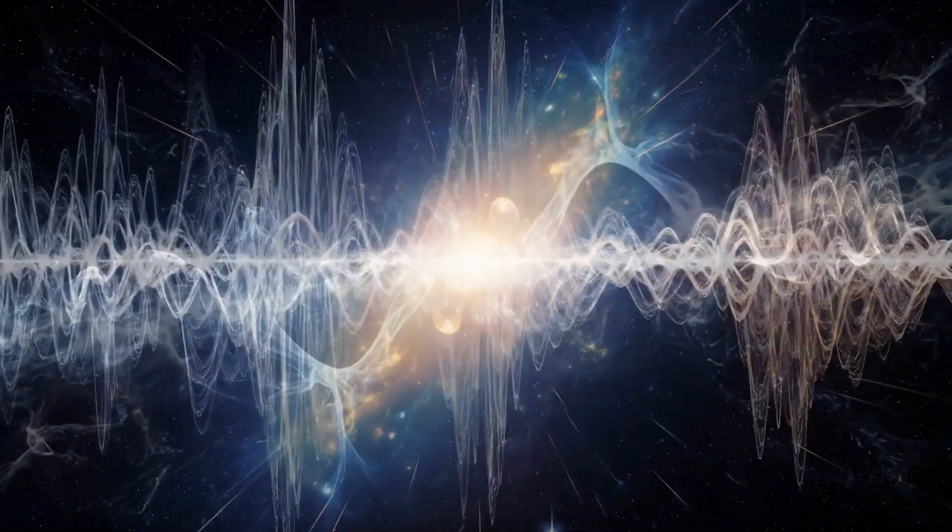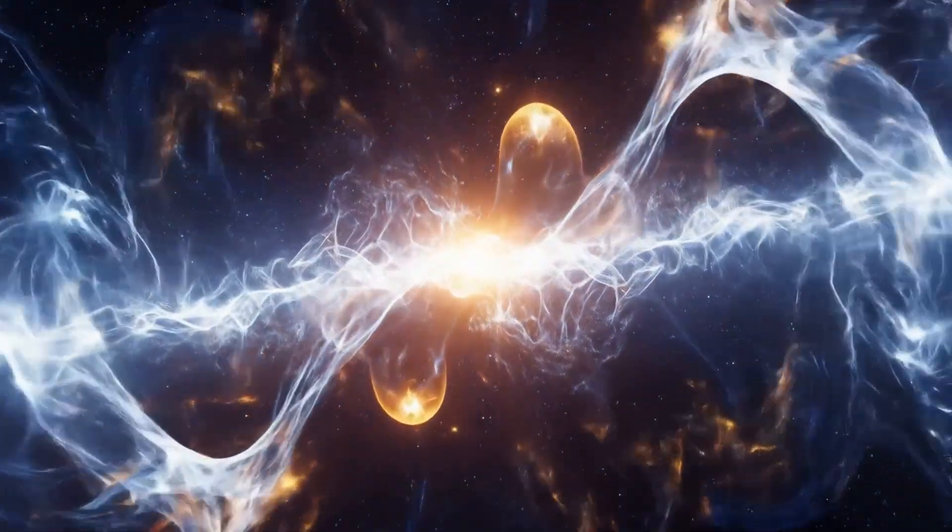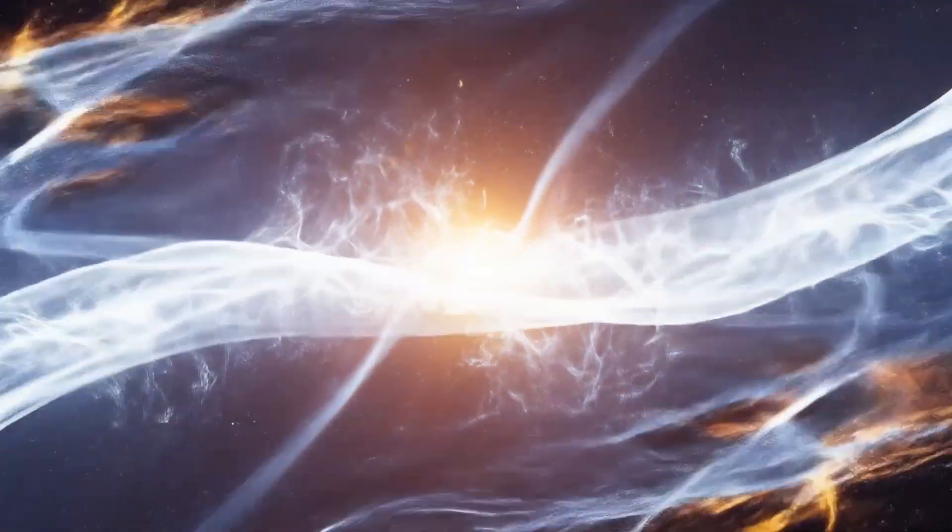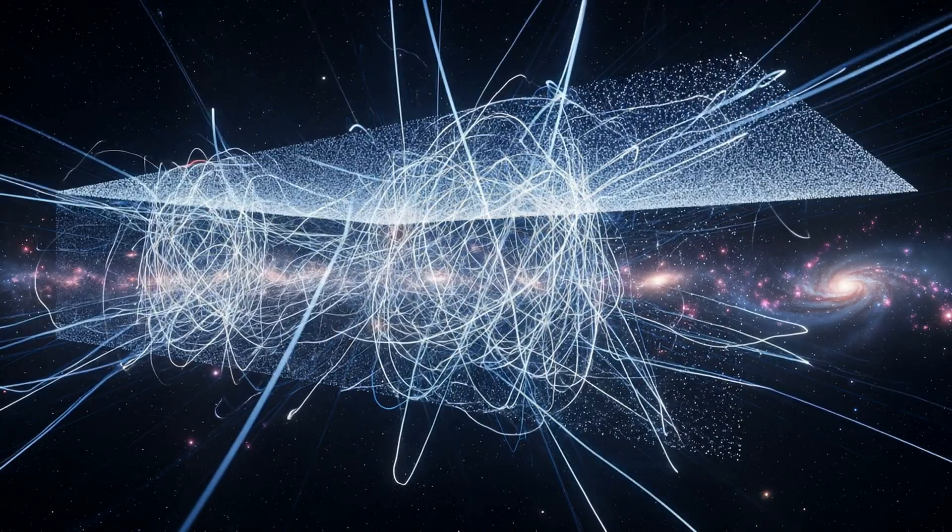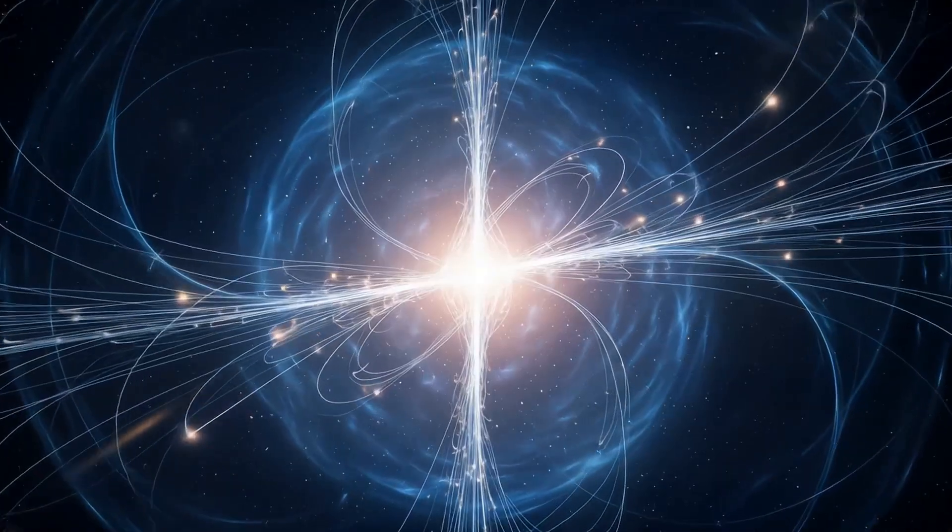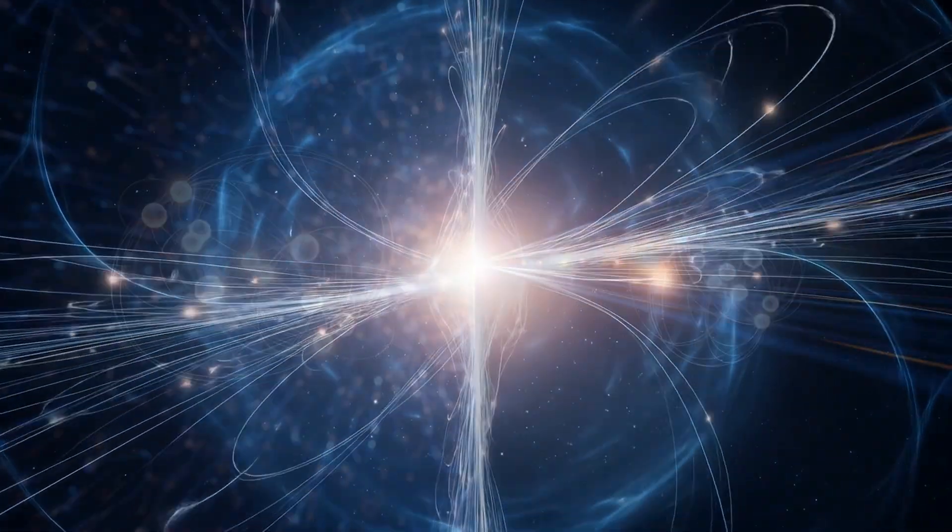Entanglement is the hidden order. Light is its reflection. The Fourier transform of entanglement is light itself. These two are mirrors. One is the source of coherence. The other is its observable shadow. They are duals. They are bound.